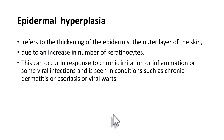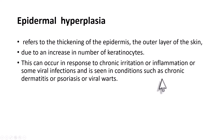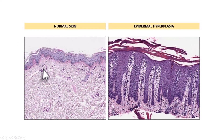The last example is epidermal hyperplasia, which refers to thickening of the epidermis — the outer layer of the skin — due to an increase in the number of keratinocytes, or squamous epithelial cells. Epidermal hyperplasia can occur in response to chronic irritation, inflammation, or viral infections — for example, chronic dermatitis, psoriasis, or viral warts caused by infection of the skin due to human papilloma virus. In the image, you can make out the markedly hyperplastic epidermis compared to normal skin with its normal epidermis and dermis.